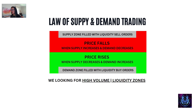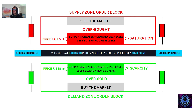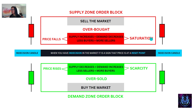We are looking for high volume liquidity zones to base our trades off of. This is basically the setup of order blocks and how they work. At the top, we've got the supply zone order block — this is when we're selling the market, when price is overbought. Supply increases, demand decreases, less buyers, more sellers — saturation in the markets. The price is falling, and these are represented by the red indecision candle.